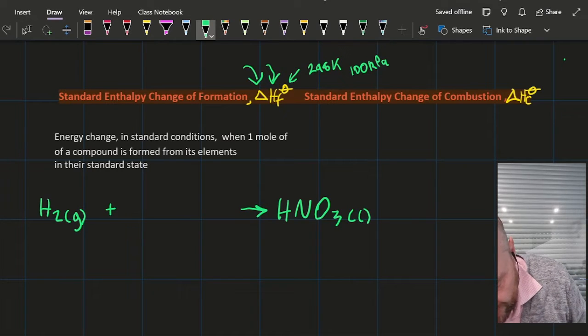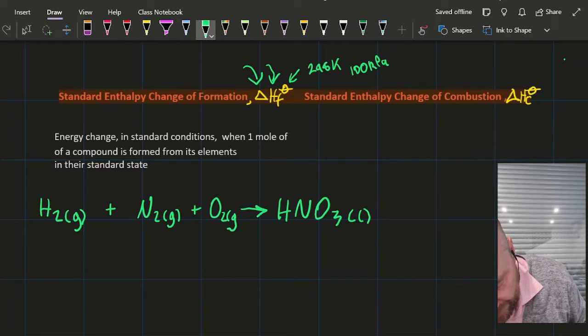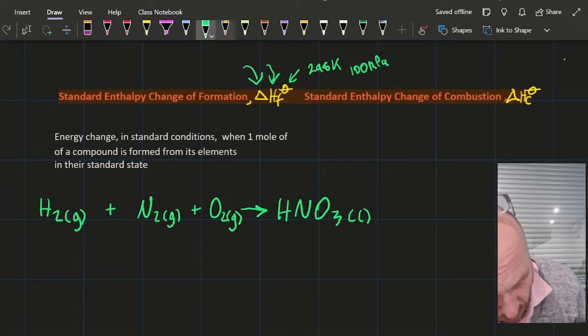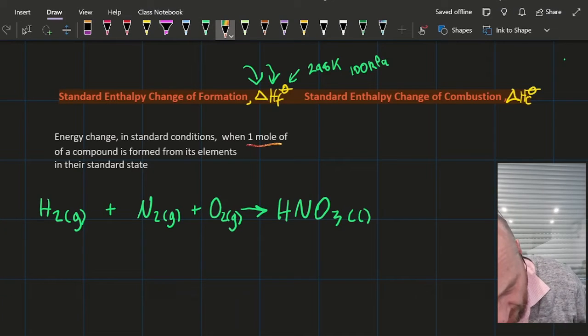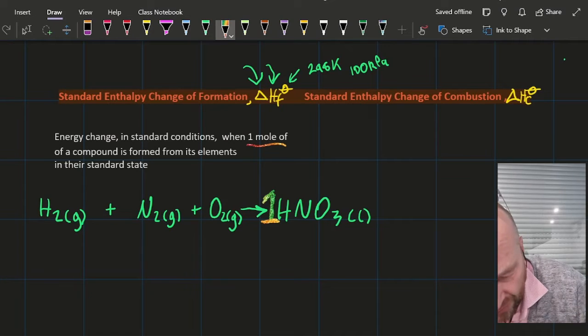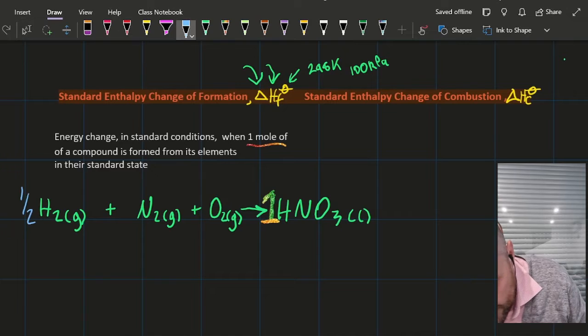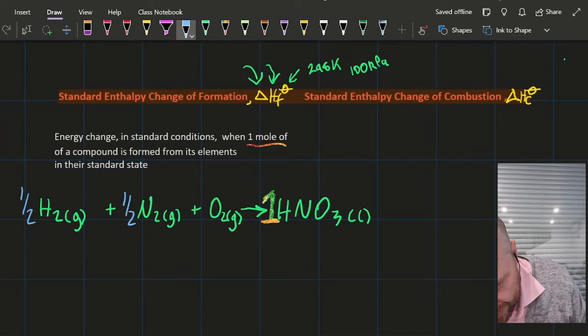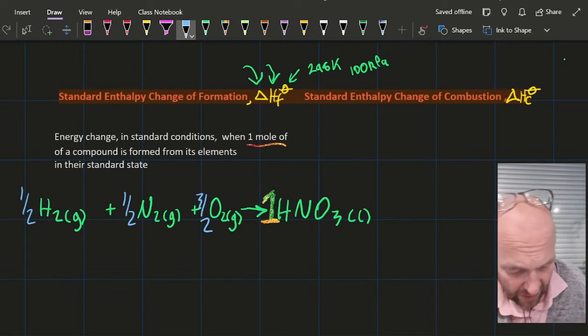Since I'm only making one mole, I'm going to put a one here to try and keep myself honest to make sure that stays at one. Now I need to balance: half here and a three over two there. Any mistake and you'll lose the point because there's normally a one point question.